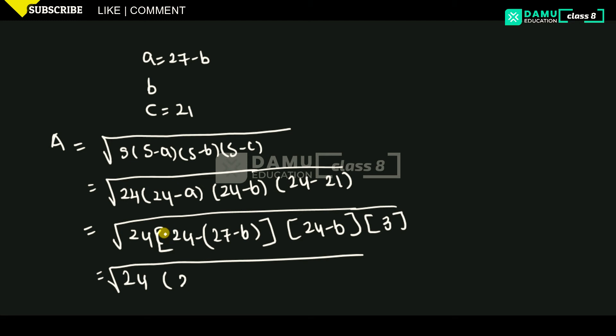So simplifying further, we get the square root of 24 times (b minus 3) times (24 minus b) times 3, which equals square root of 72 times (b minus 3) times (24 minus b).